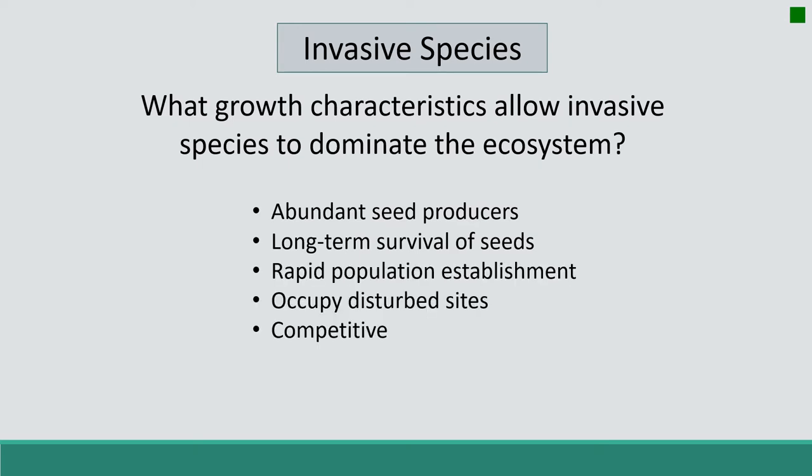Invasive species have rapid population establishment. They're often pioneer species after disturbance, meaning they're the first to occupy a disturbed site, which gives them a competitive advantage. Cheatgrass, a winter annual, can use resources more quickly in the spring than our native species, making it more competitive.